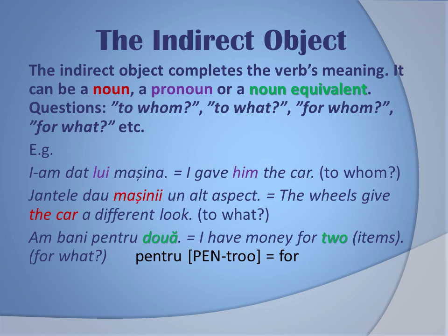The indirect object can also be a noun, pronoun, or noun equivalent. But in contrast to the direct object, it answers the questions 'to whom', 'to what', 'for whom', 'for what', etc. For example: 'i-am dat lui mașina' — I gave him the car. To whom? 'Lui' — him.